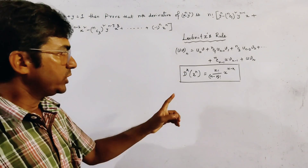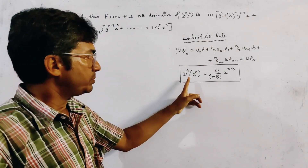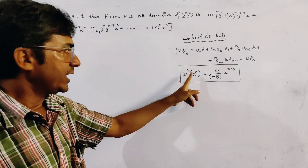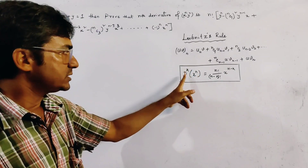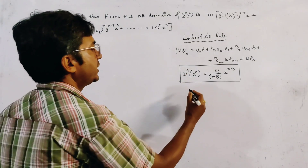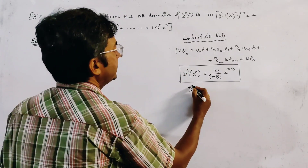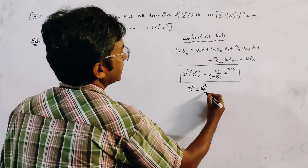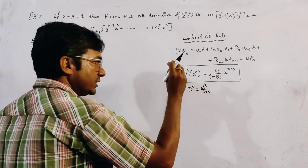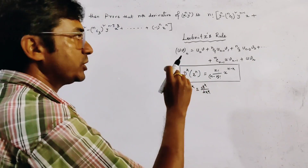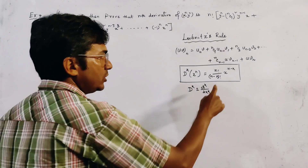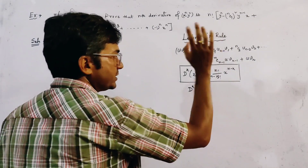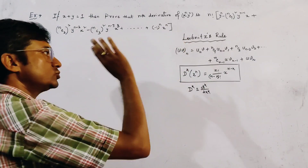We also use another rule of successive differentiation: the differential operator D_k applied to x to the power n — that is, the k-th derivative with respect to x — equals n factorial divided by (n minus k) factorial, times x to the power (n minus k).